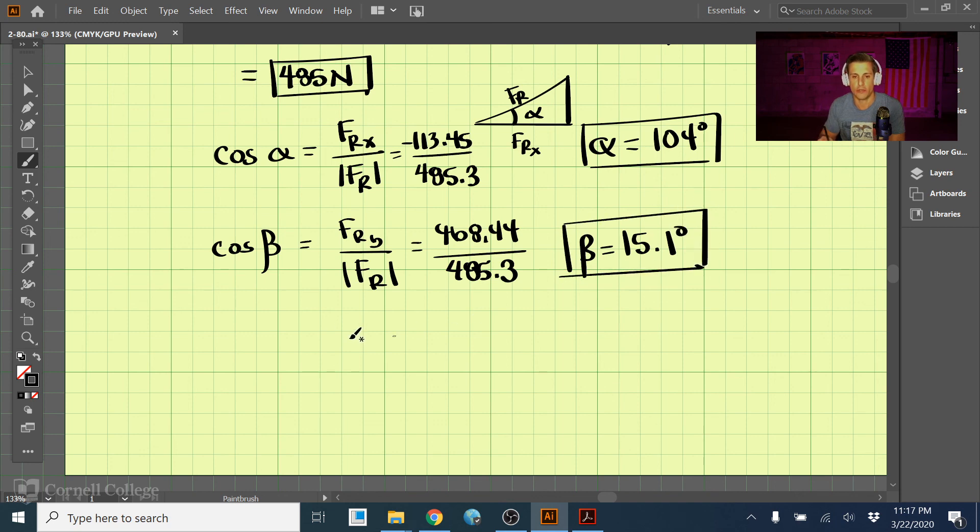And now I think you get the idea. The last one is cosine of gamma, and that's the resultant in the z direction divided by the magnitude. And doing this and then inverse cosine here, we have gamma is 83.3 degrees. So that is problem 280.